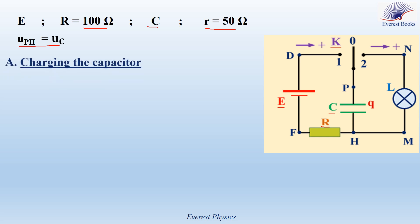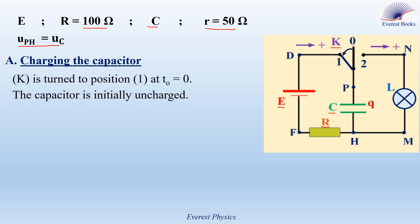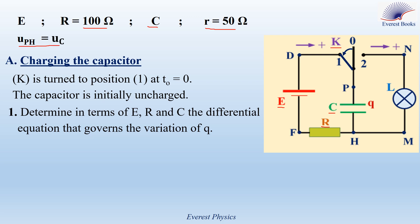Let's start with the charging process of the capacitor. K is turned to position 1 at time 0. The capacitor is initially uncharged. Question number 1: determine in terms of E, R, and C the differential equation that governs the variation of Q.